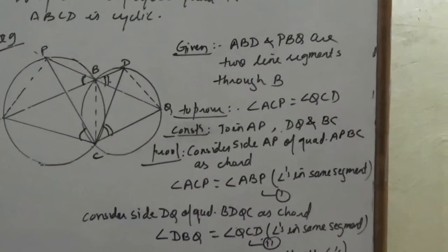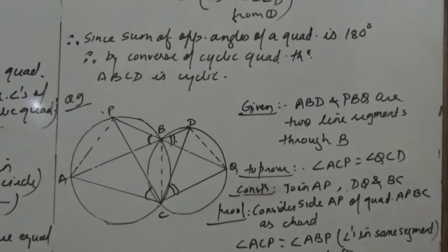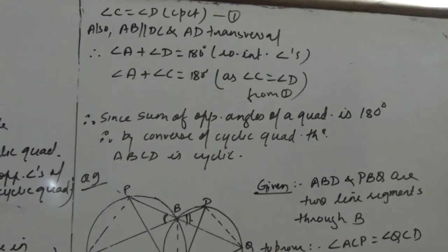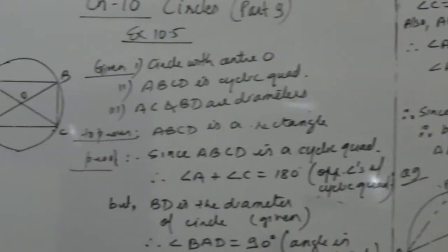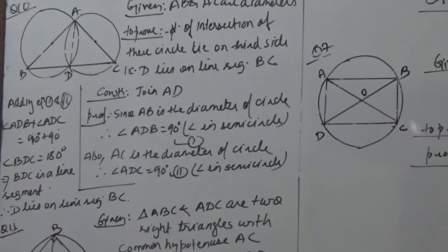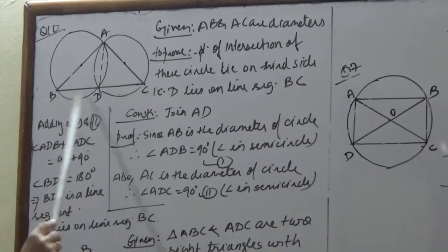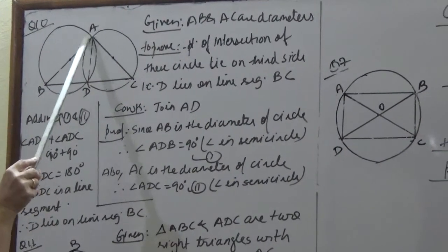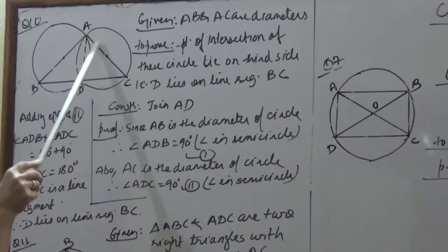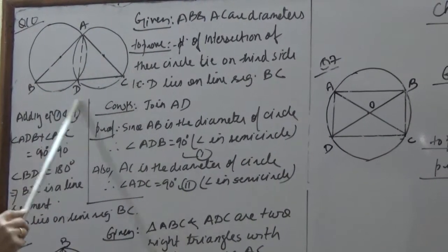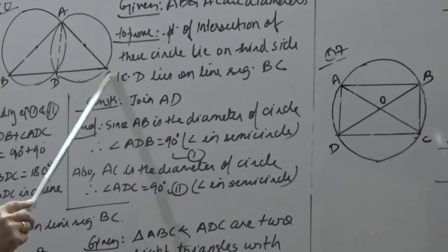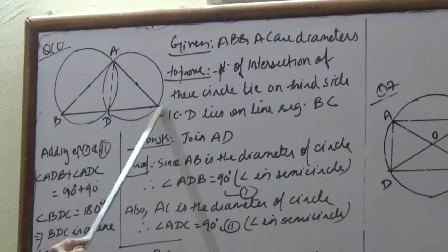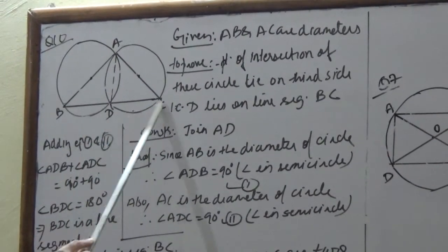In question 10, it is given that circles are drawn taking two sides of a triangle as diameters. We have to prove that the point of intersection of these circles lies on the third side. In triangle ABC, one circle is drawn with AB as diameter and another circle is drawn with AC as diameter. We have to prove that D lies on side BC.